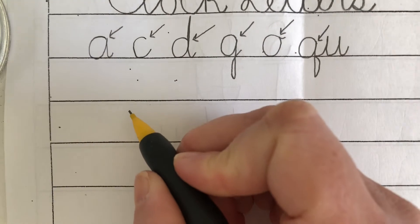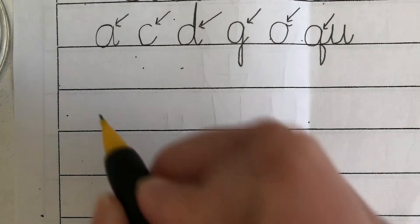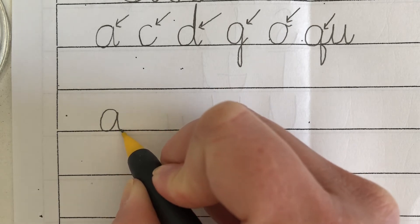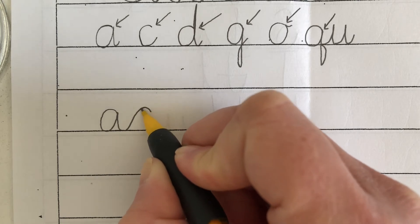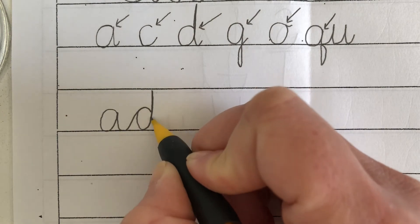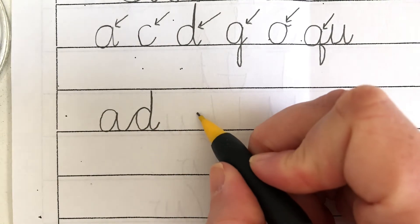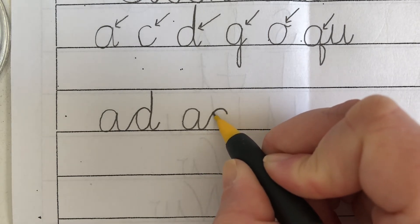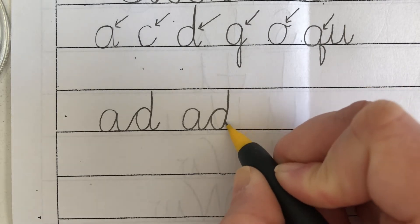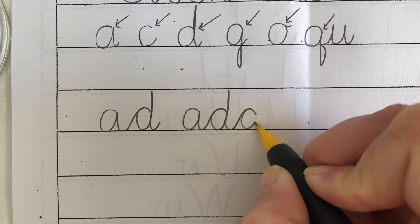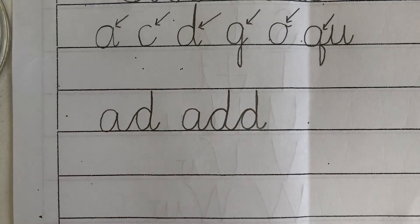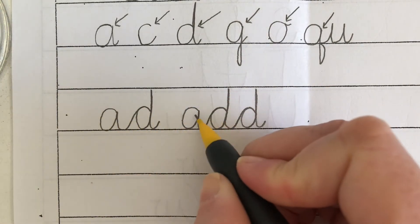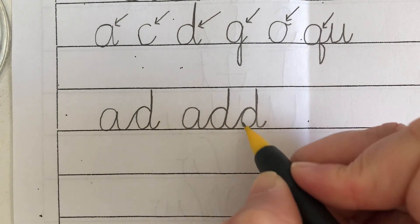Let's do ADD. We start at two on the clock, up and around the clock face, back to two, pull straight down to the baseline, upswing to two, retrace. They all started at two on the clock with an upswing to two, then retrace for each D. So that was ADD — all starting at two on the clock.